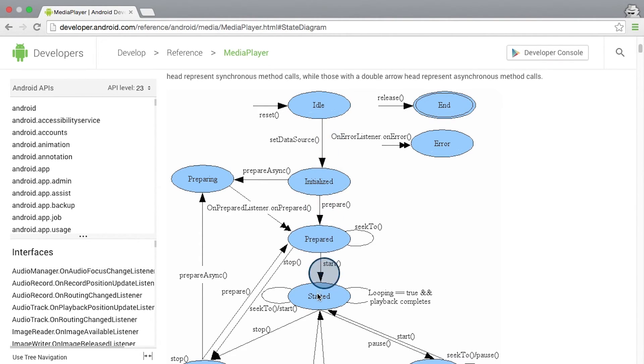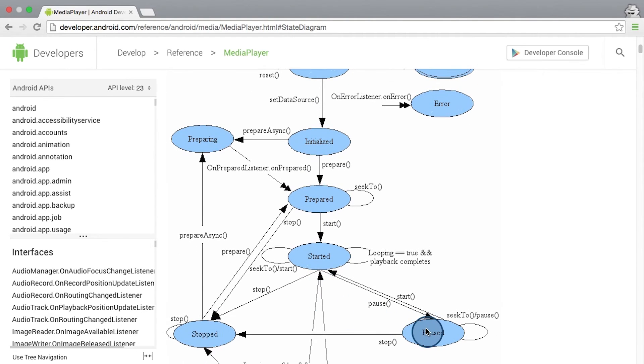So idle, prepared, started, paused, stopped, and a couple other ones. Note that it also provides details on what media player methods we can call in order to transition between these states. So feel free to take a look at the state diagram more on your own. And we've linked it below in the notes.